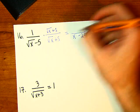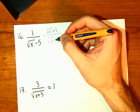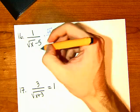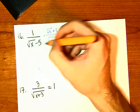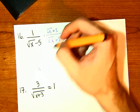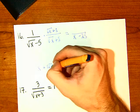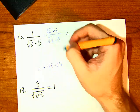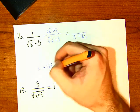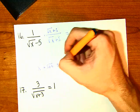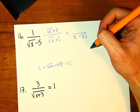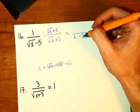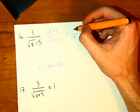Let's do it step by step. Square root of x times square root of x is x. Square root of x times 5 is plus 5 square root of x. Minus 5 times square root of x is minus 5 square root of x. And minus 5 times 5 is minus 25. The middle terms cancel, leaving x minus 25 in the denominator.